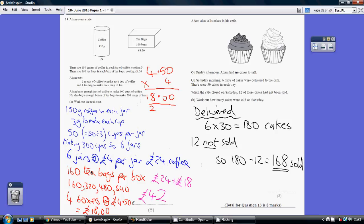Now, tea bags are a bit more straightforward. There's 160 tea bags in a box. We've got to make 500 mugs of tea. So, just looking at buying boxes at 160 each. Well, one box is 160, two boxes 320, three boxes 480.